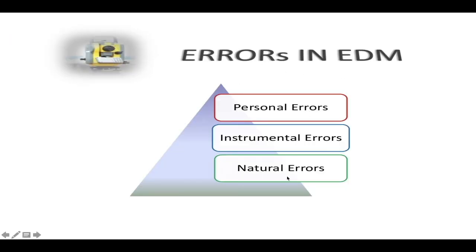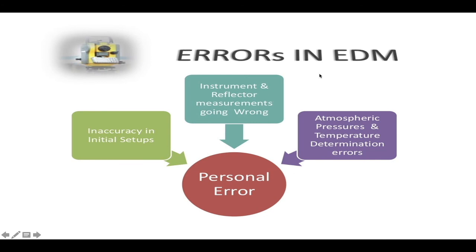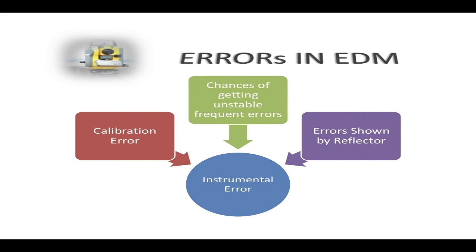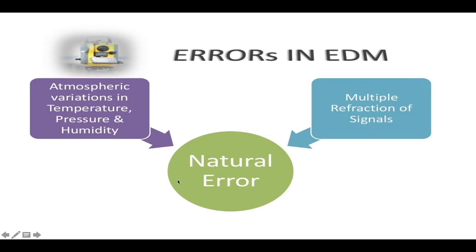There are three types of errors in EDM: personal errors, instrumental errors, and natural errors. Personal errors include inaccuracy in the initial setup of the instrument and reflector, measurements going wrong, or atmospheric pressure and temperature determination errors. Instrumental errors might be calibration error, changes of setting, unstable frequency errors, or errors from the reflector. Natural errors include atmospheric variation in temperature, pressure and humidity, or multiple refraction of signals.